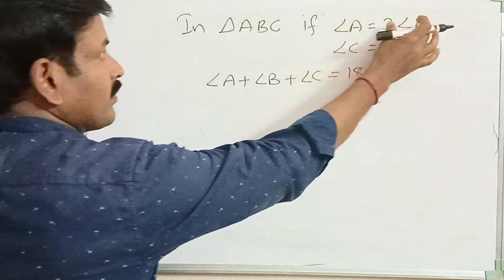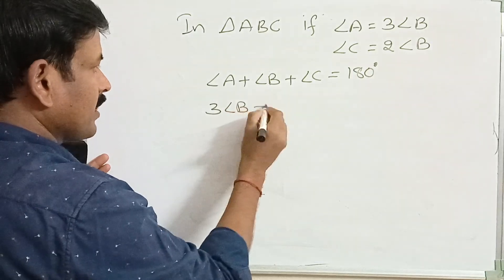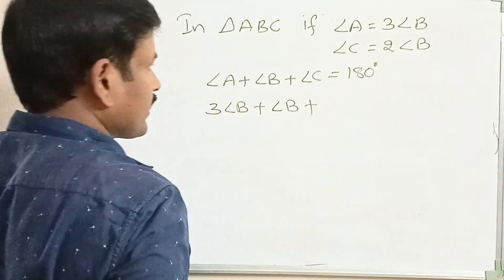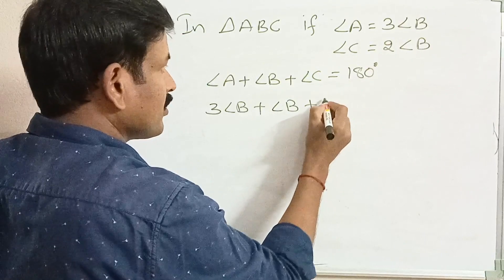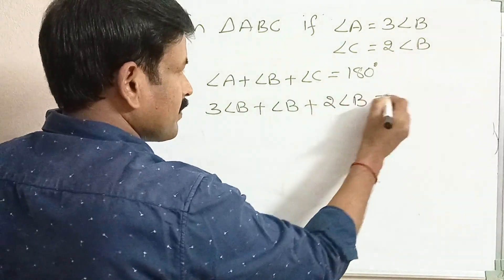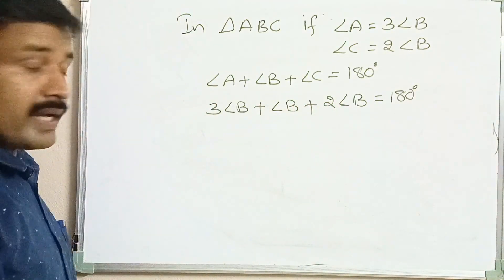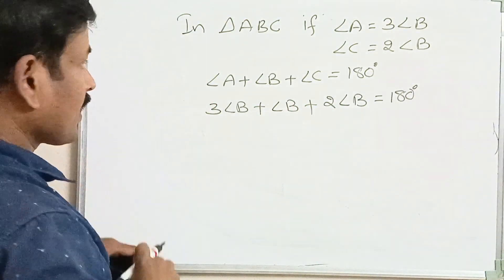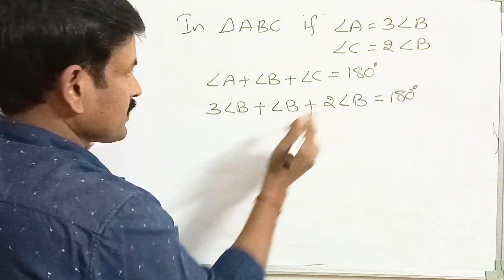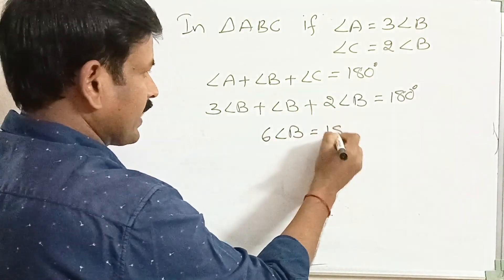Substituting: angle A is 3 times angle B, plus angle B, plus angle C which is 2 times angle B equals 180 degrees. So 3 plus 1 is 4, and 4 plus 2 is 6. Therefore, 6 times angle B equals 180 degrees.